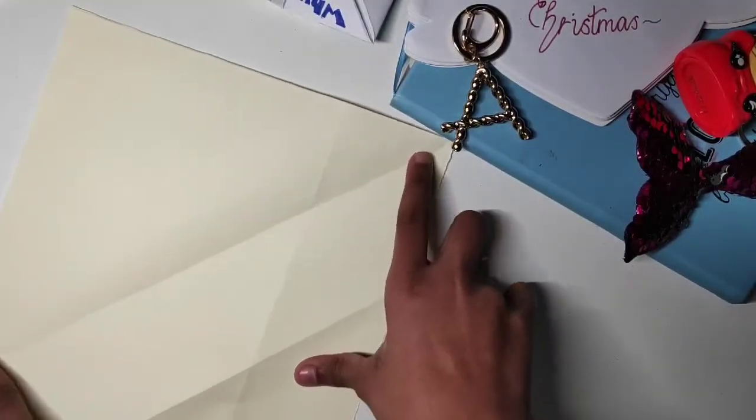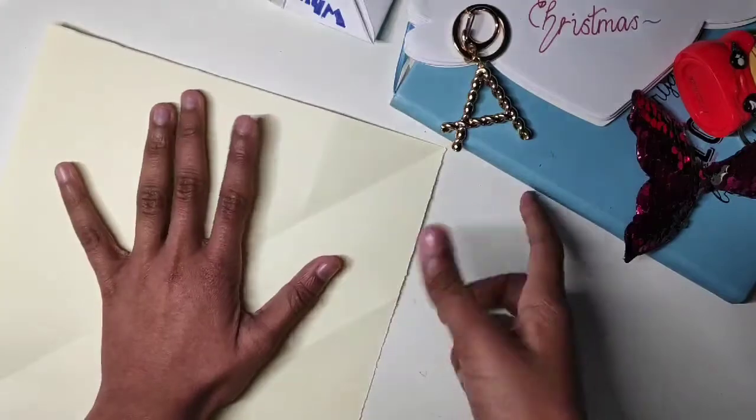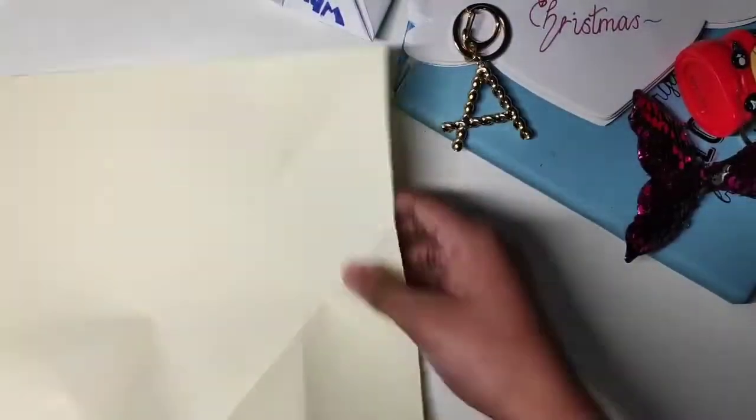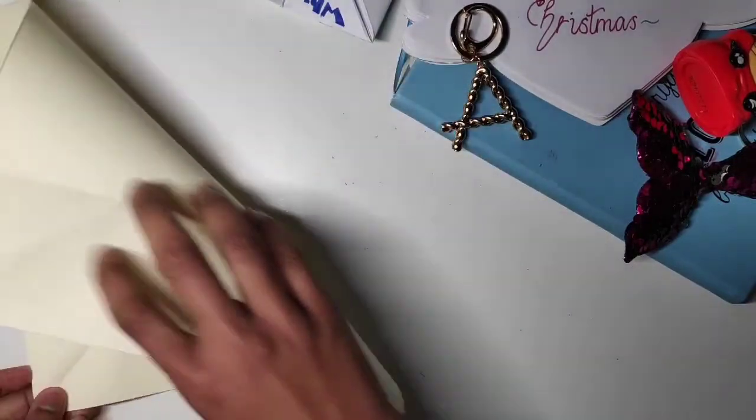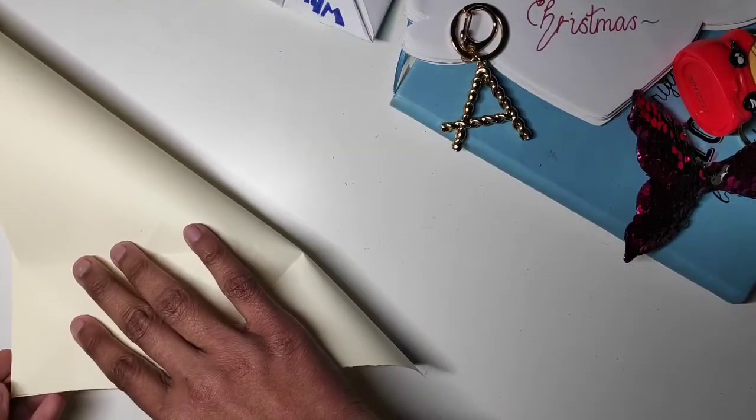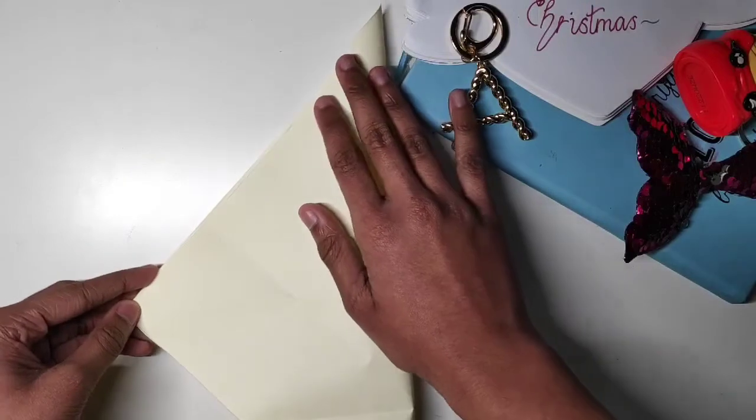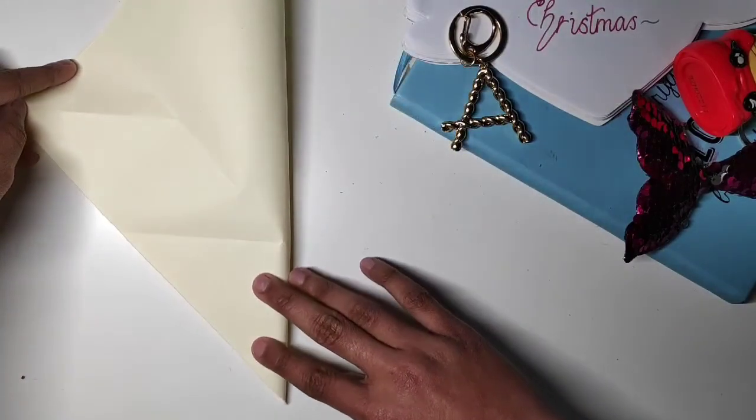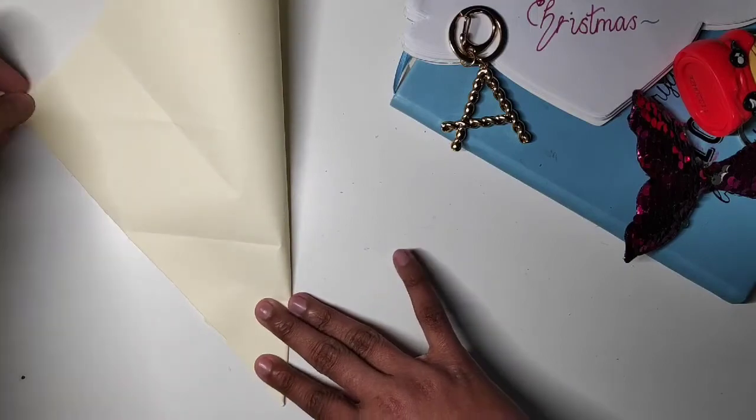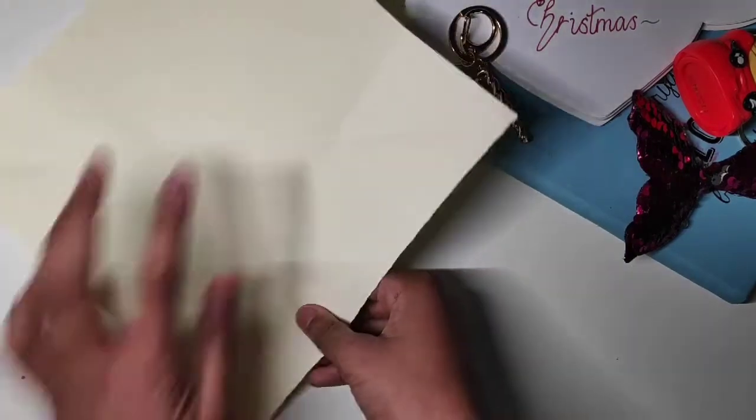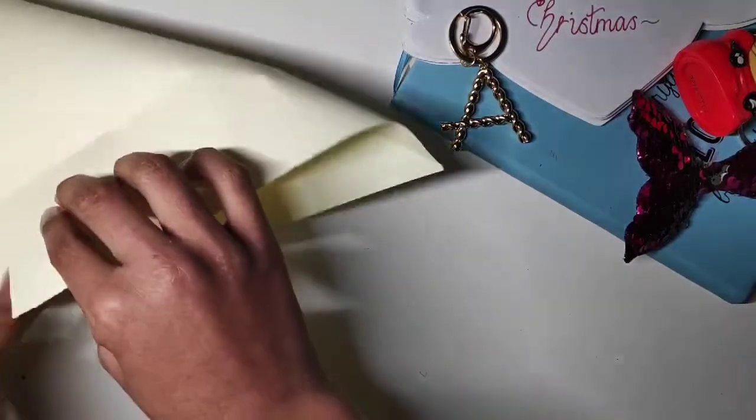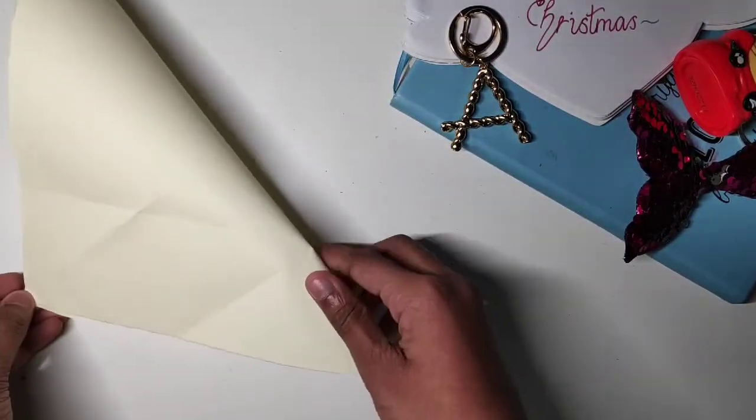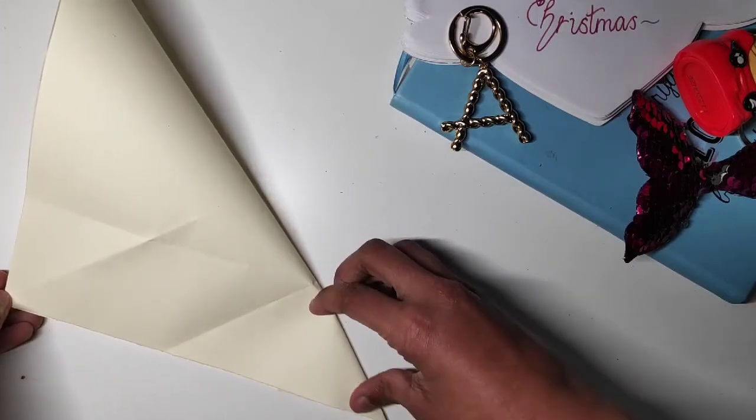So now I've got this big line. I've folded it this way, so now I'm going to take this edge and fold it here. So if you're not really good at folding, just hold it at one point and then just check if it's aligned. It is, and check the other side. Yes, so now you've got to hold it.